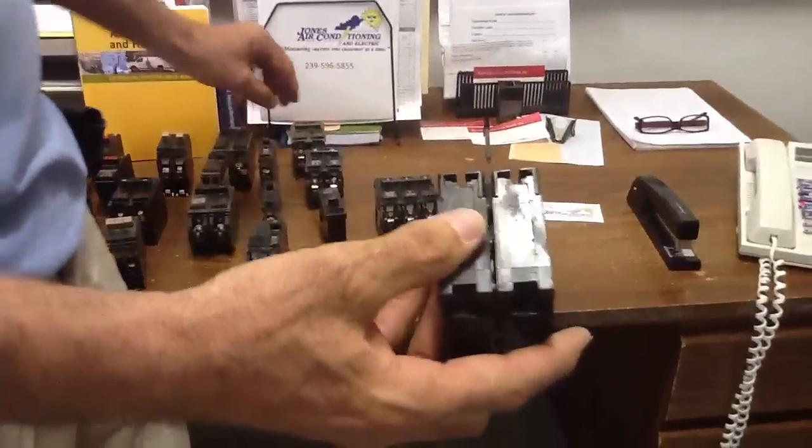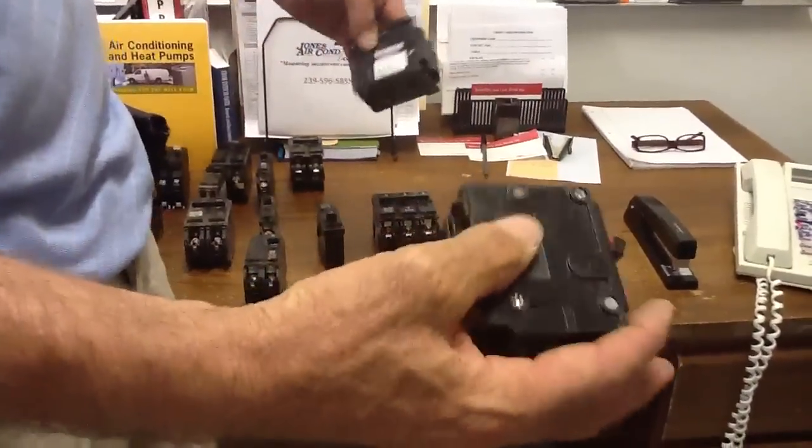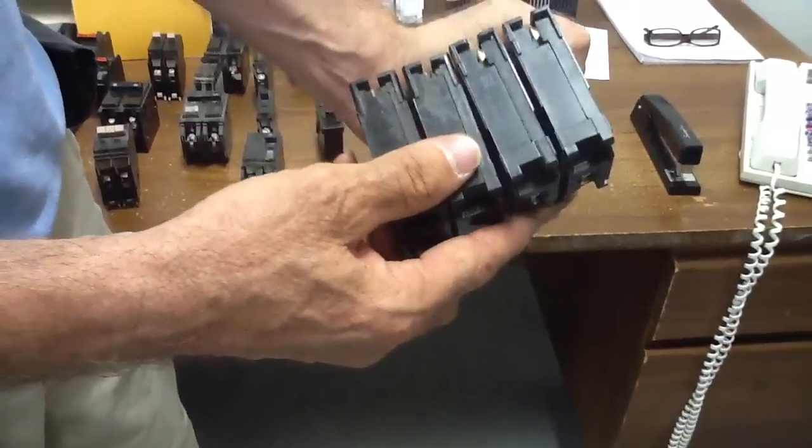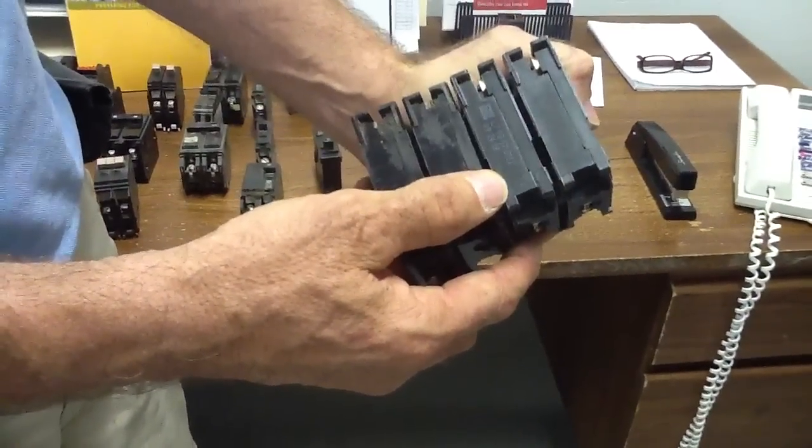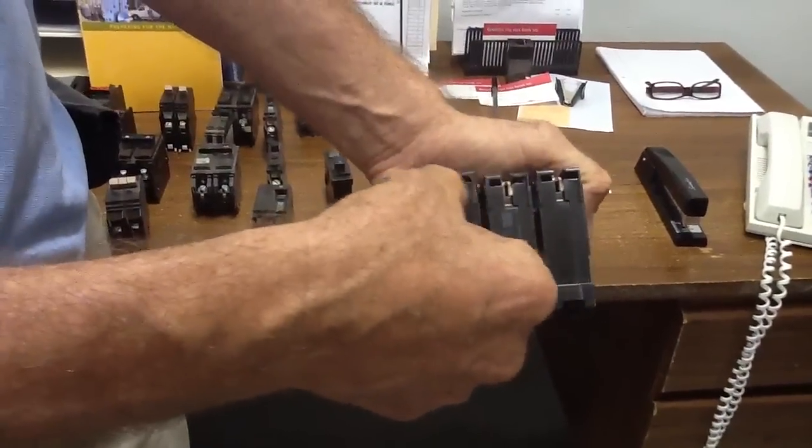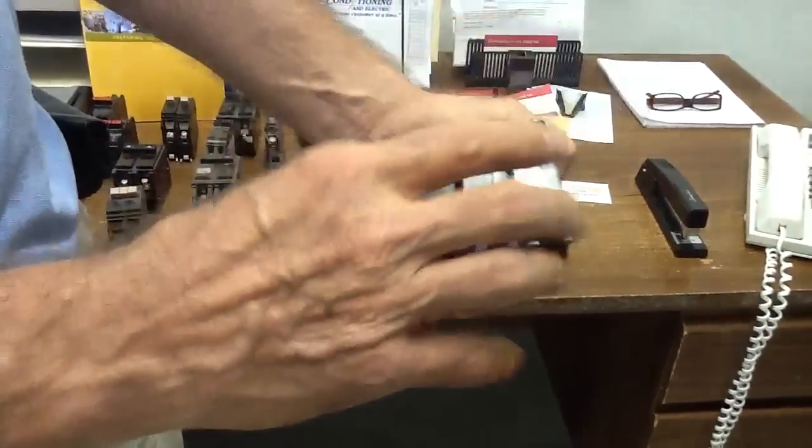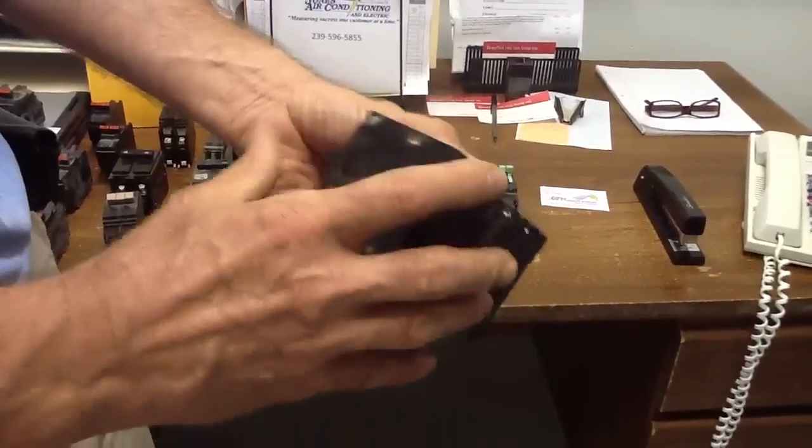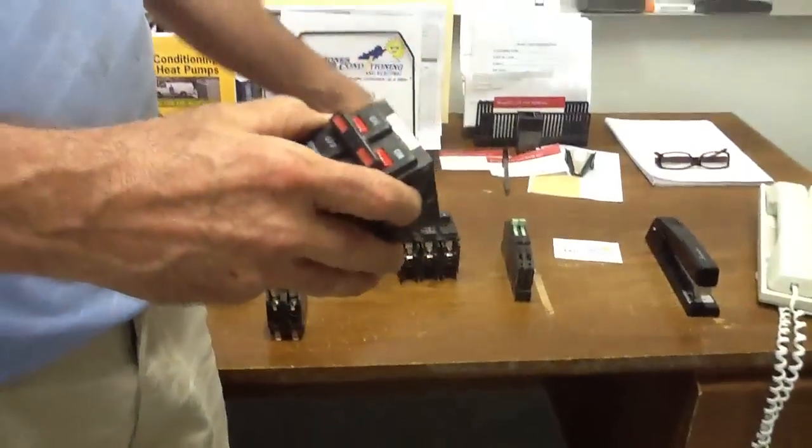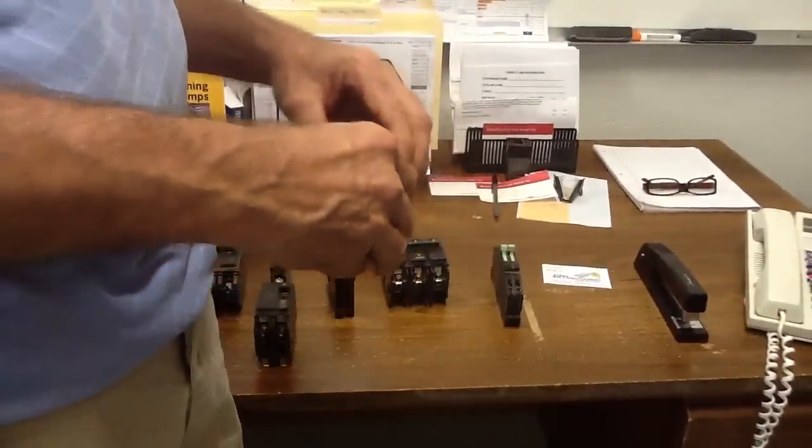Once again, this is a double pole. This is an old breaker, is what this is. I pulled out of somebody's. See the footprint? The footprints are the same. So yes, you could interchange these breakers if you wanted to, but you're not supposed to. A qualified electrical contractor would know better, and he wouldn't do it. That's why it's always important to use licensed contractors in your business.